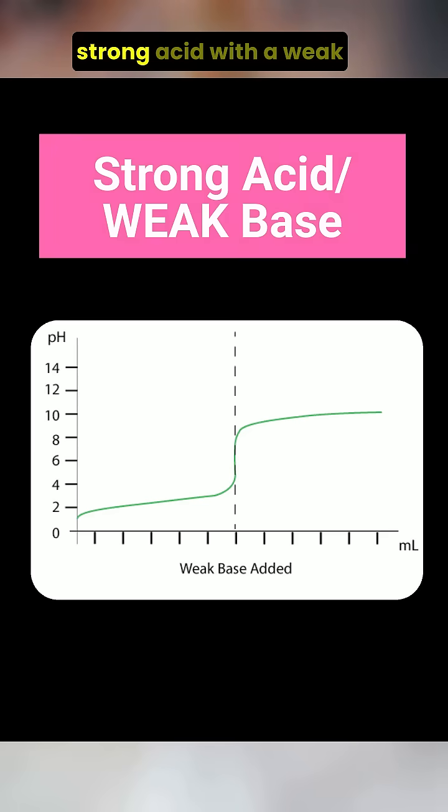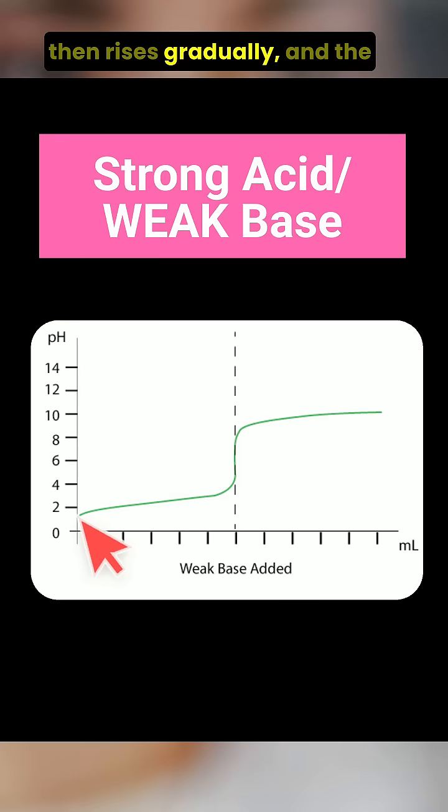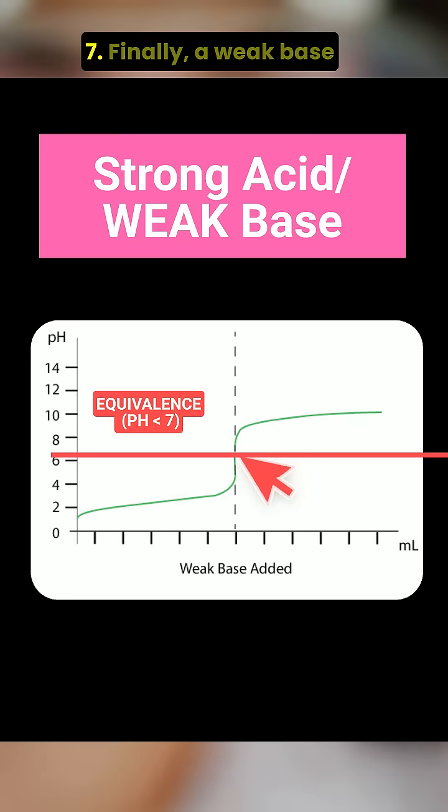Then we have a strong acid with a weak base, such as hydrochloric acid titrated with ammonia. If you're titrating the weak base into the strong acid, the curve starts at a low pH, then rises gradually, and the equivalence point is below pH 7.